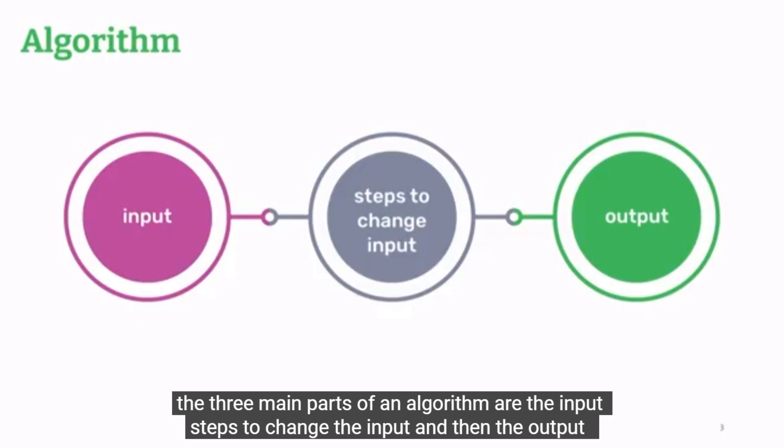The three main parts of an algorithm are the input, steps to change the input, and then the output.